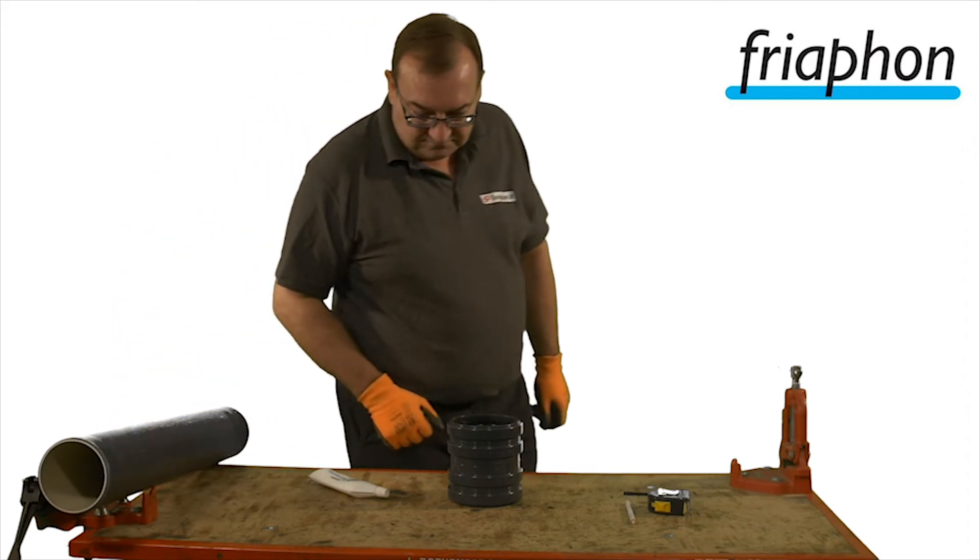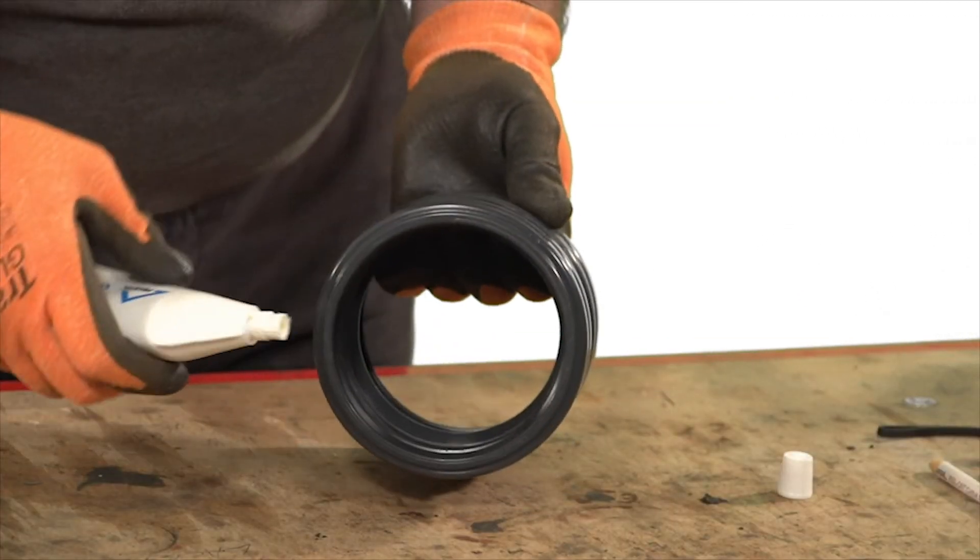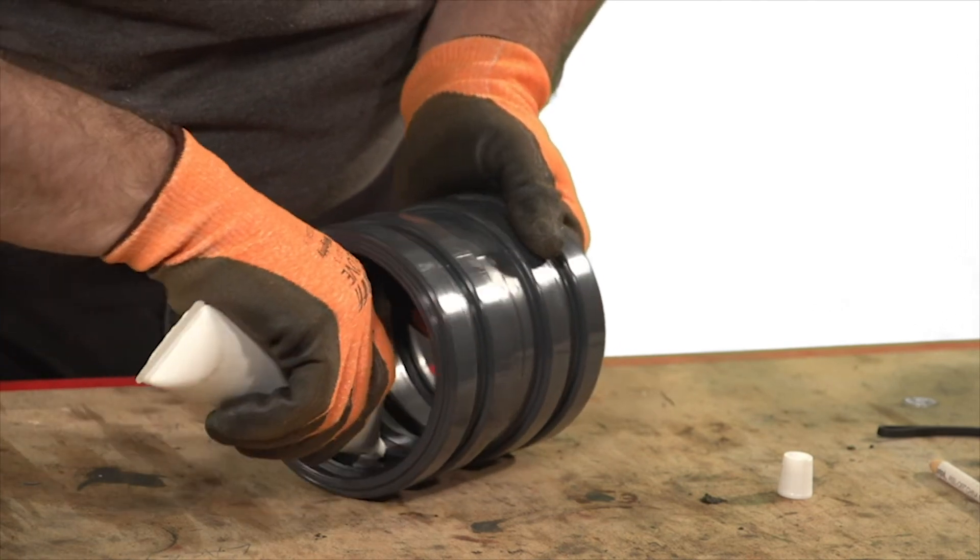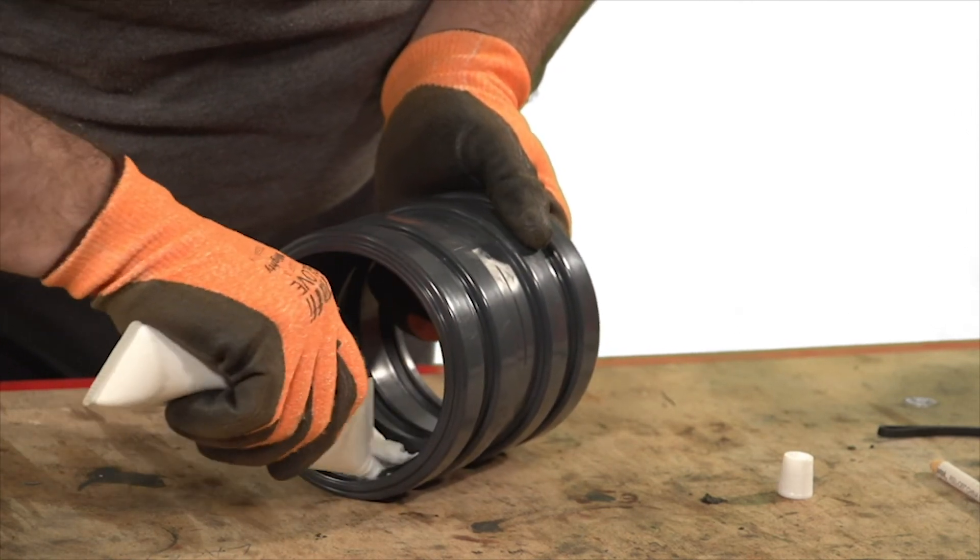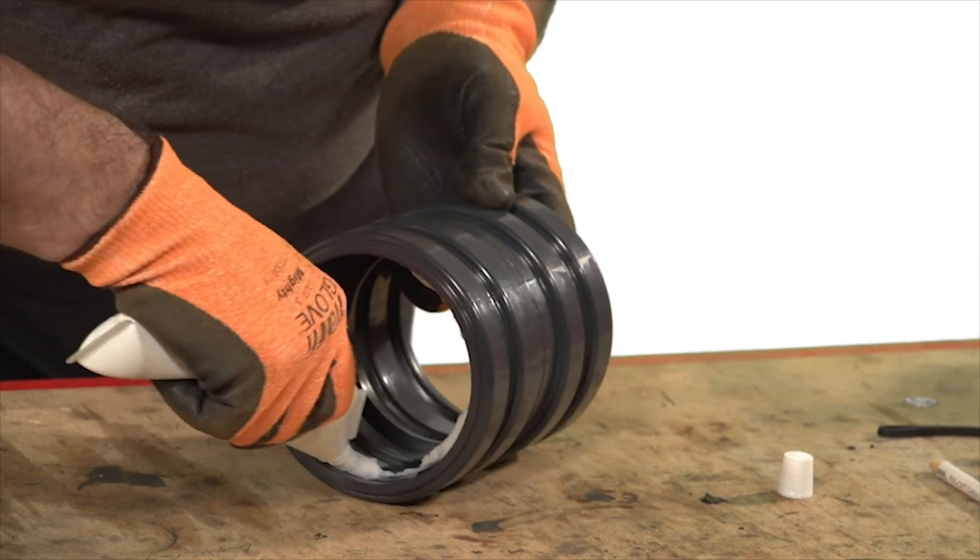Apply Phryophon lubricant on all lip seals. Only use lubricants that are approved for Phryophon products as an inappropriate lubricant may damage or disintegrate the sealing.